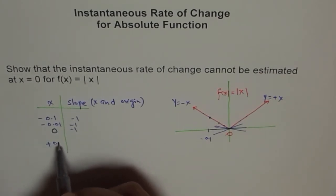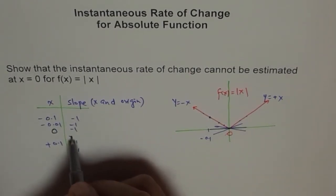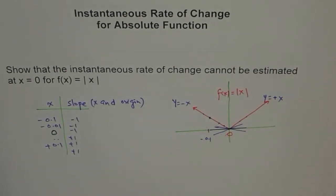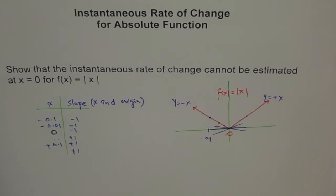If I go more closer, let's say 0.01, still that point come closer, for example here, but still the slope is minus 1. Even if you come very very close, the slope remains minus 1. Do you see that? But, as soon as you go to plus side, the slope, all of a sudden, becomes plus 1. So, the slope is not approaching any value. Slope is not approaching any value.